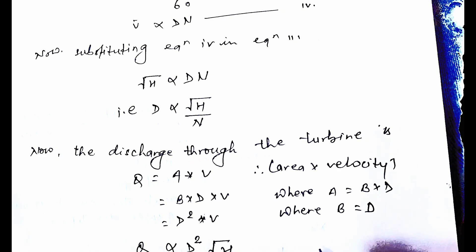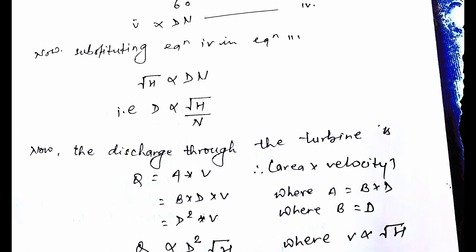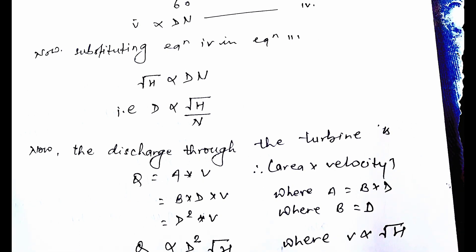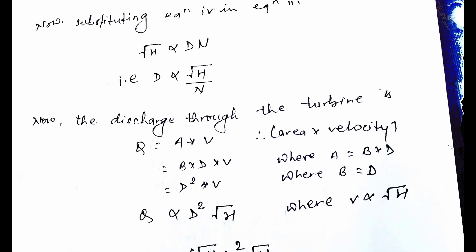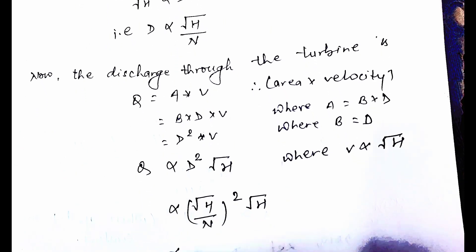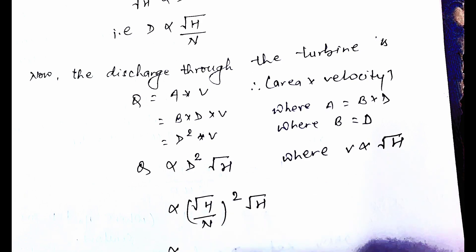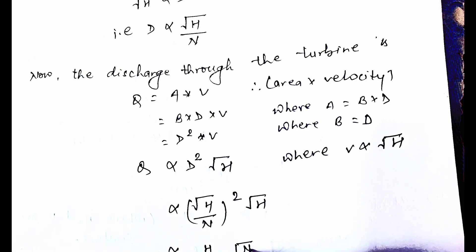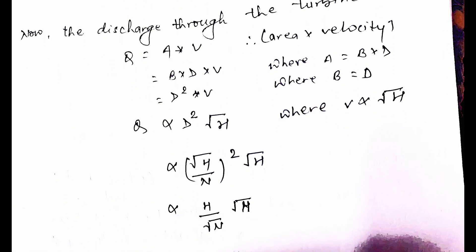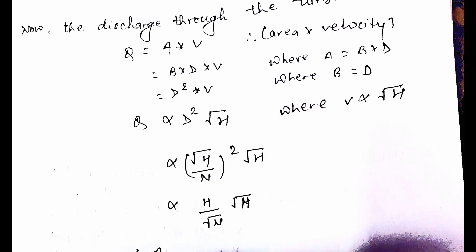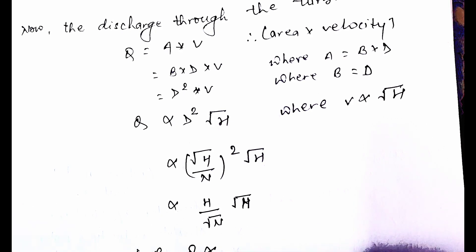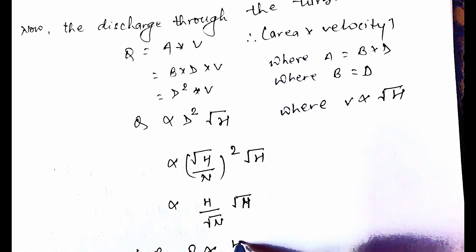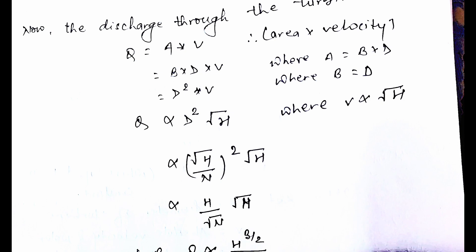Substituting the expression for D (proportional to root H / N) into the discharge equation: Q is directly proportional to (root H / N) squared times root H, which simplifies to H to the power 3/2 divided by N squared. This is the relationship for Q.